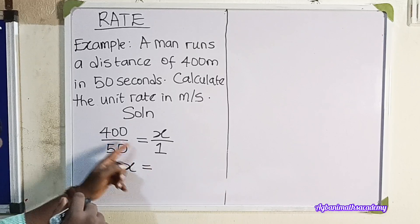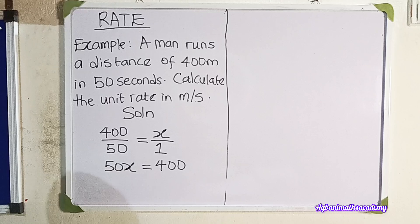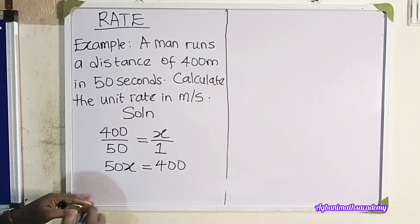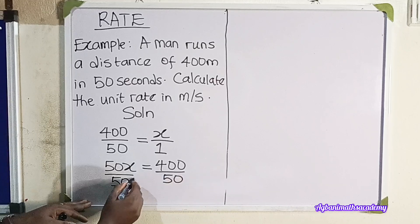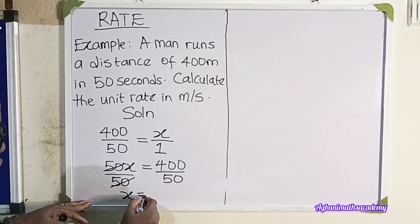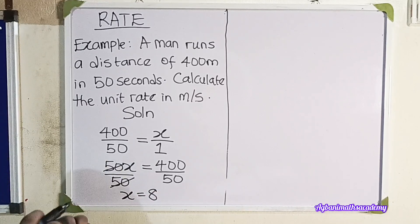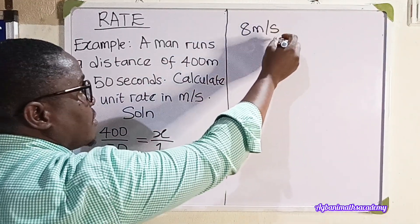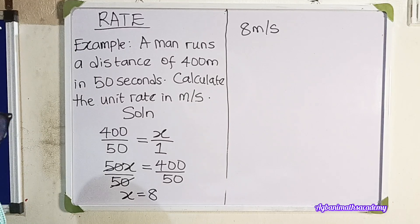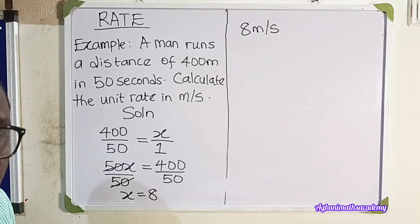It is equal to 400 multiplied by 1, which gives us 400. So to get the value of x, we divide both sides by 50. 50 cancels out 50, and we have x equal to 400 divided by 50, which is 8. So the value of the distance is 8. This means that the unit rate is 8 meters per second — the man covers 8 meters in one second.